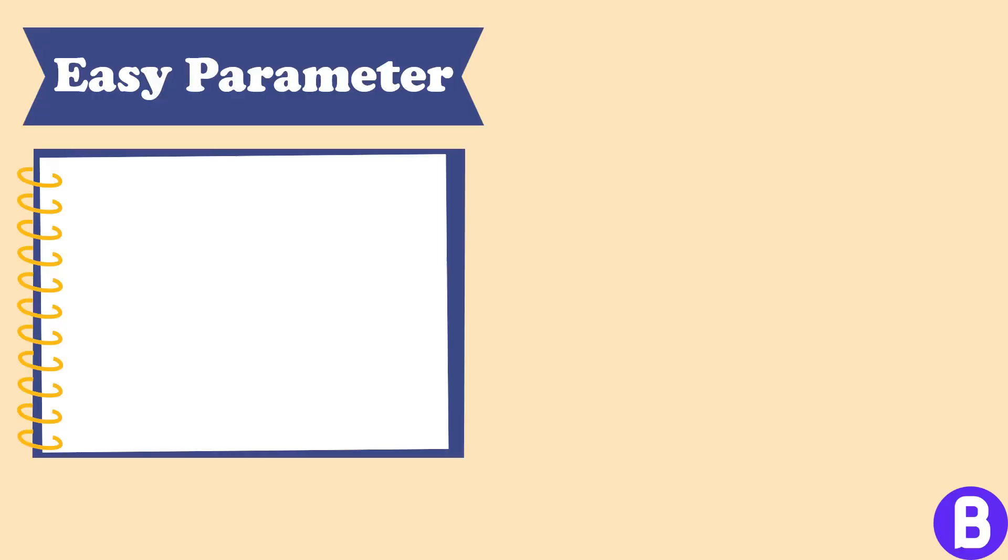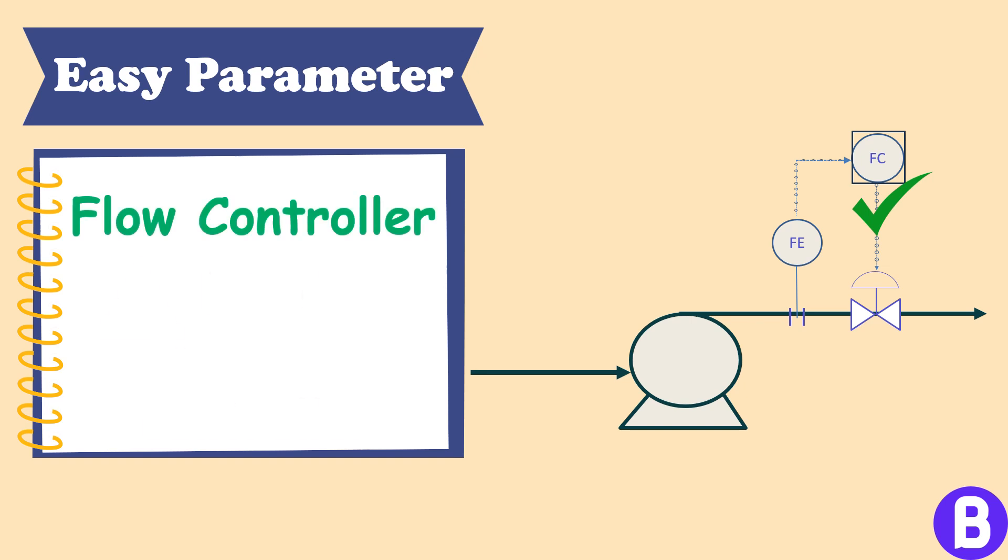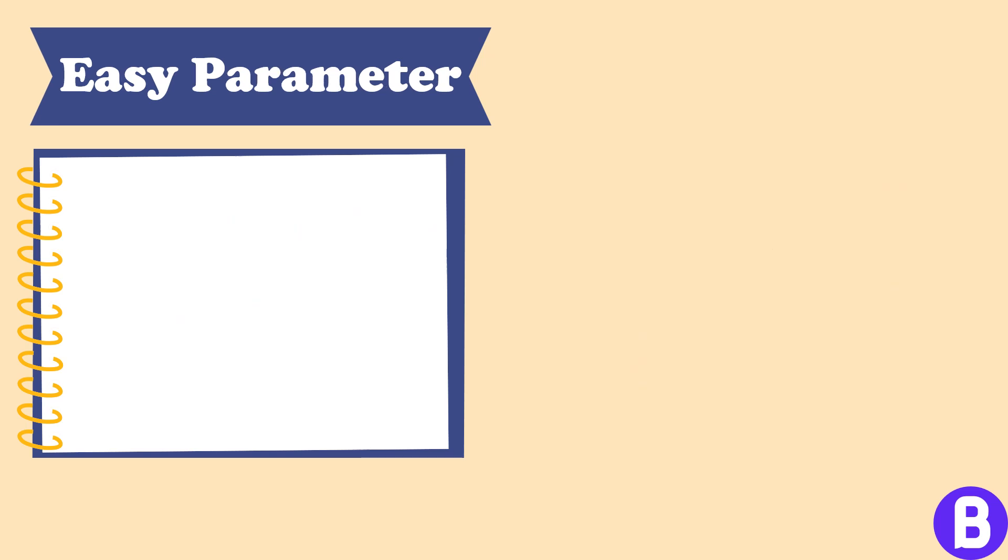When we want to control the performance of the system, we should try to choose the parameter that shall be easier to control and directly affects the system. For example, when we want to control the performance of a pump, it's common to use a flow controller not a pressure controller, although the pump is mainly used to rise the pressure of a fluid. This is because the pump performance curve plots the volumetric flow rate against the pump head. This means that the pump output is head not pressure.